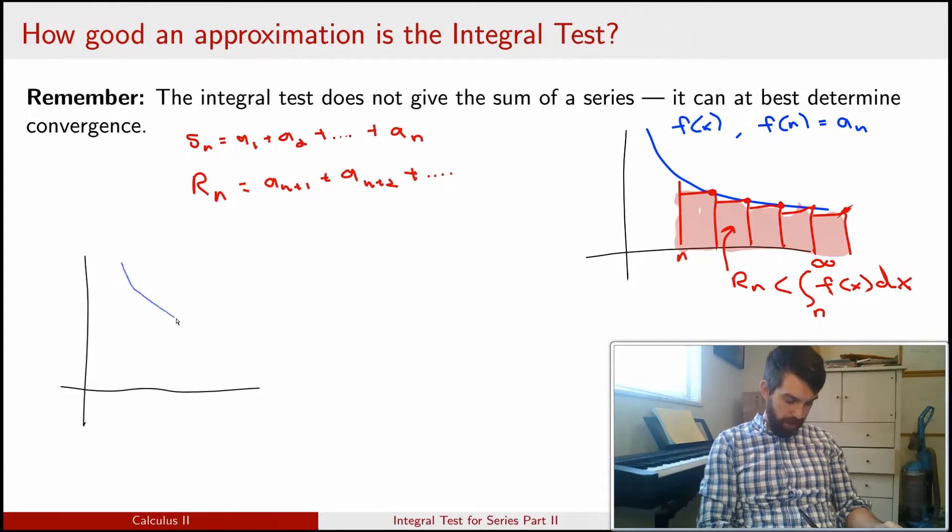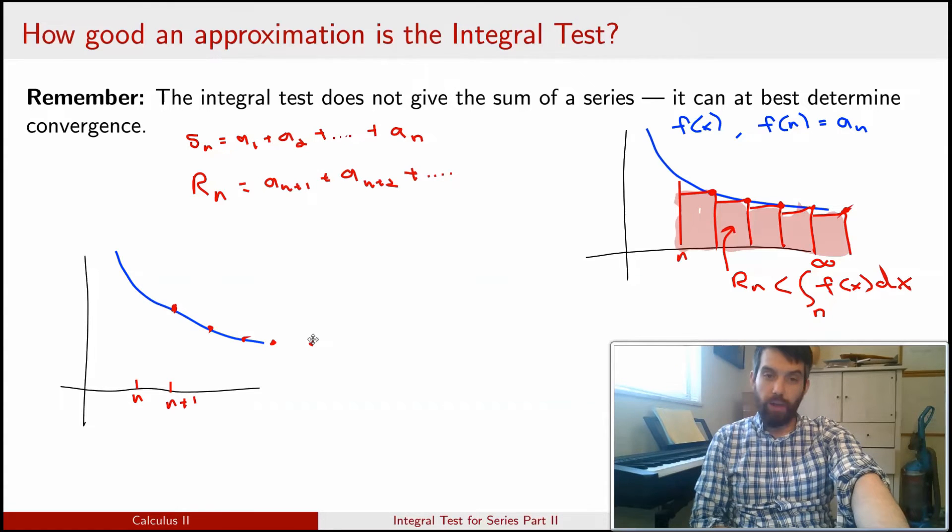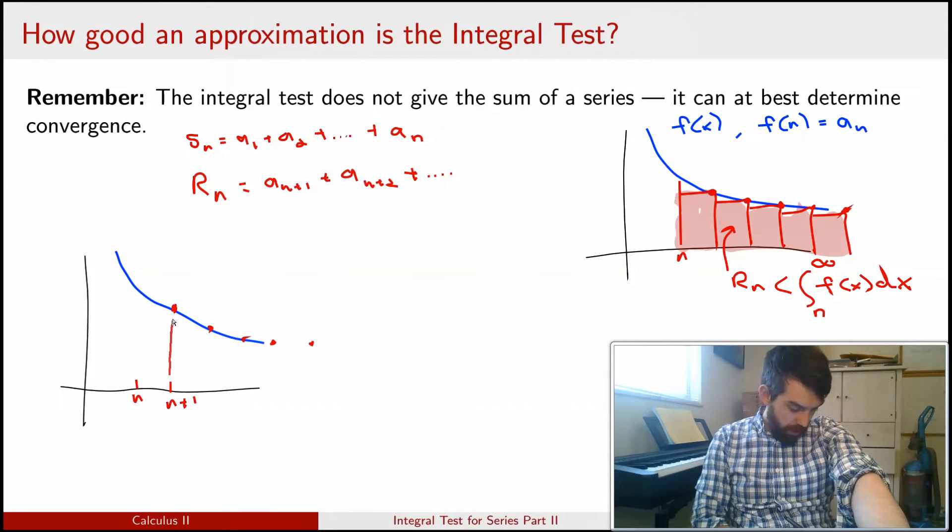I'm going to repeat this story again. I'm going to have n down on the bottom, and I'm also going to put in n+1 here. If I plug in all of my points, this is my remainder, the an+1, the an+2, and so on down the line. This time, instead of using a right approximation, I'm going to use a left approximation. That means that my rectangle is going to look like this, and so on down the line.